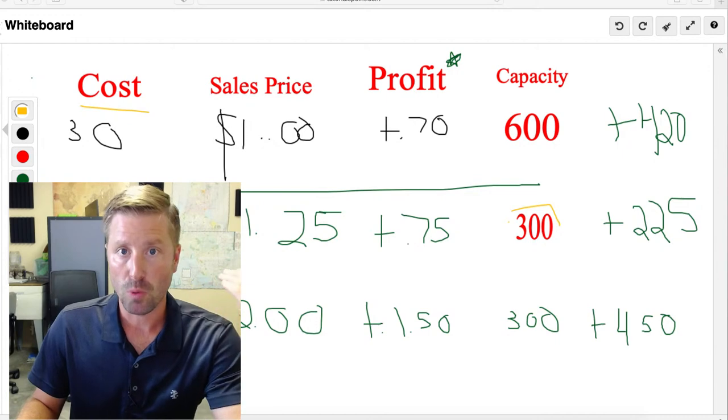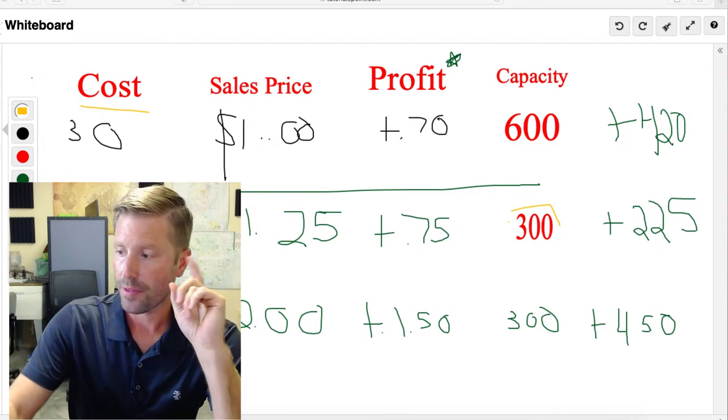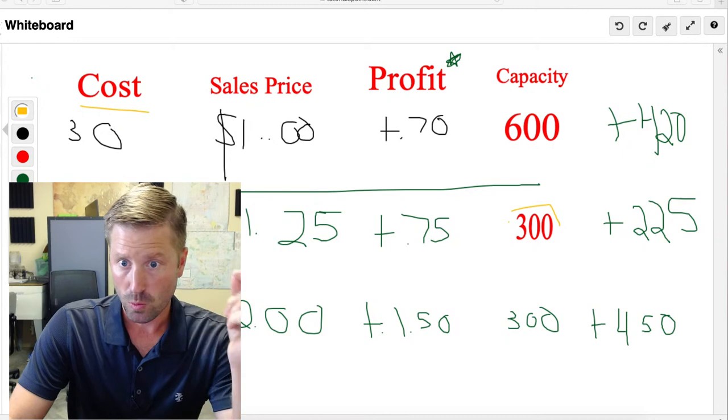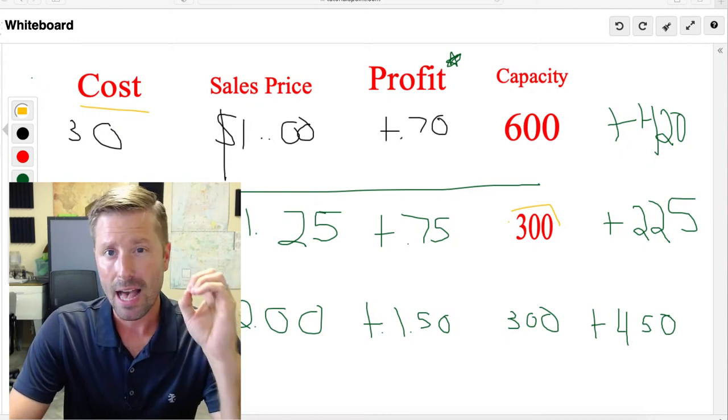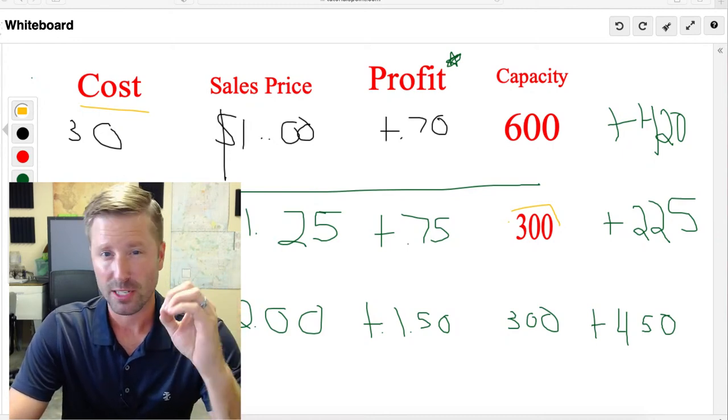And let's say the capacity on that machine, the capacity on that machine is 300, okay? Because it's about half. It can hold about half as many bottles as cans.